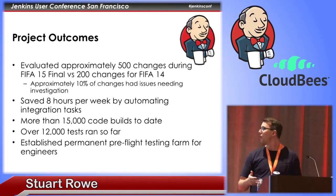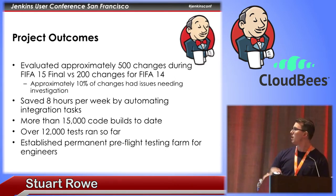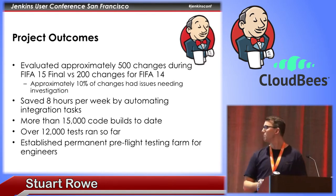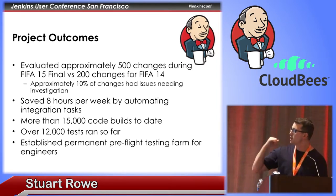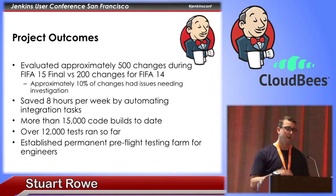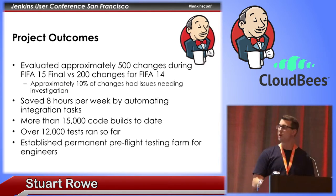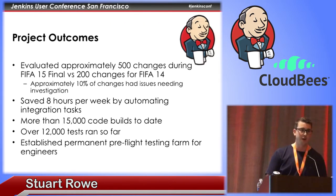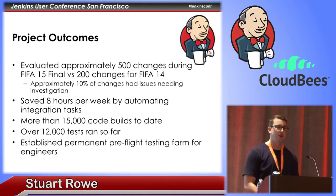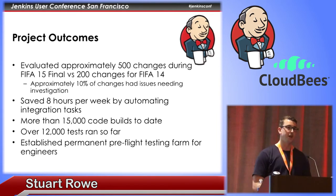So how successful were we in moving to Jenkins? For FIFA 15 compared to FIFA 14, we were able to evaluate 500 changes — 500 bug fixes we wanted to commit to ship our game — versus 200 at FIFA 14. About 10 of those changes had performance or stability issues requiring further investigation. One unexpected benefit was a previously manual integration task that took one engineer eight hours per week to integrate between our gameplay development code line and our main development code line, pushing one integration in each direction per week. Using our automated system, we increased that to 10 to 20 integrations per day with very little engineer intervention. We also now have a permanent pre-flight testing farm available to our engineers, who have been using it to push potential optimizations overnight and get results in the morning.